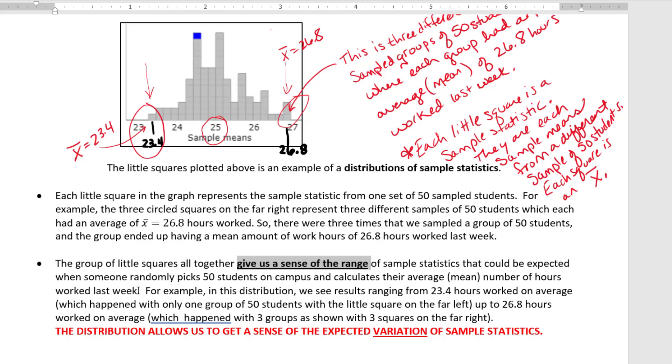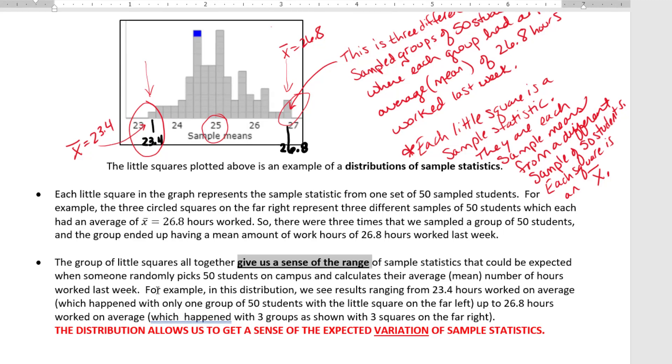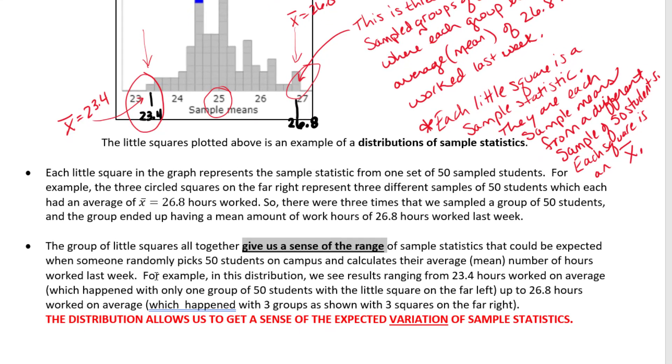So since we see in our distribution that the sample means seem to range from about 23.4 hours worked per week up to an average of about 26.8 hours per week worked, I would expect if you went out and sampled 50 students on campus randomly that you would get an average somewhere between there. It would be unusual if you got something much higher than 26.8 or much lower than 23.4.